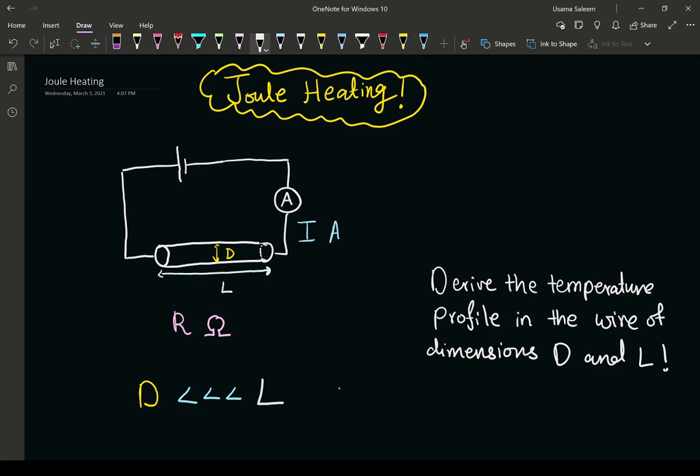In this video we're going to go over Joule heating. We've been dealing with heat conduction and transport with generation. There are three main ways of heat generation: nuclear reaction, chemical reaction, and some application of electricity — specifically the flow of electricity.